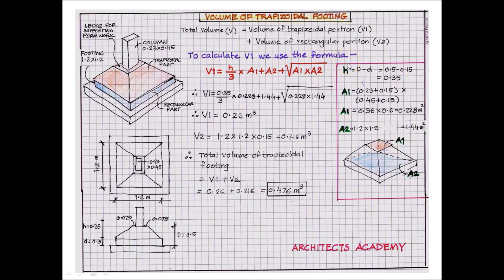Here, h denotes the height of the trapezoidal portion, which is 0.35 meters. This is derived as the total height of the footing, 0.5, less the rectangular part height of 0.15, giving us 0.35.